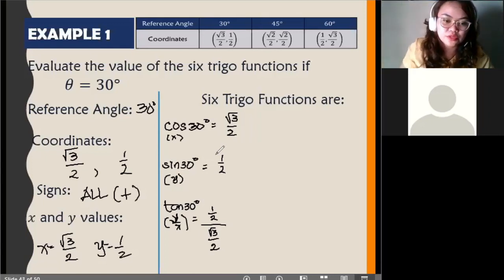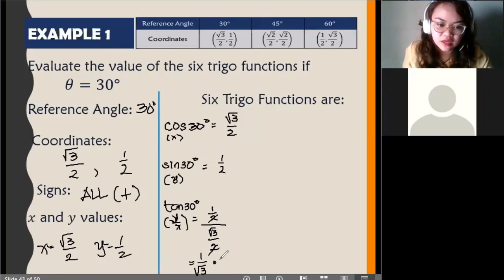How will you get that if you are using manual? Cancel, cancel. You'll get 1 over the square root of 3. And then, rationalize. Ito'y sinasabi ko ang haba ng process. Yes. Rationalize. You'll get square root of 3 over 3. Next.